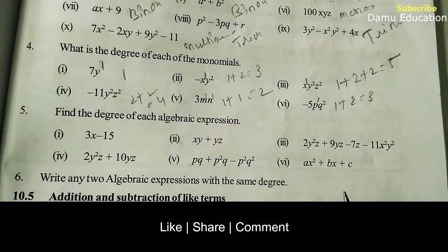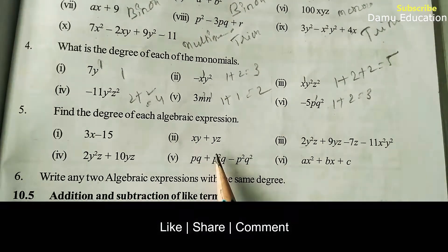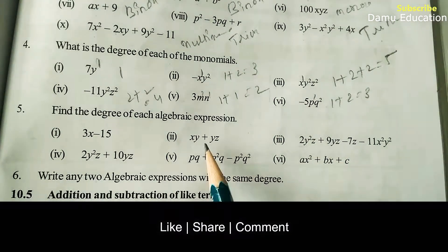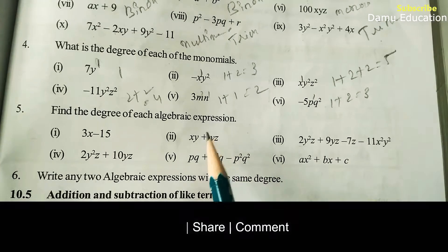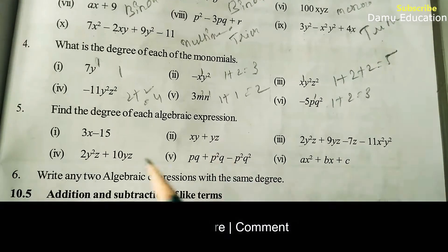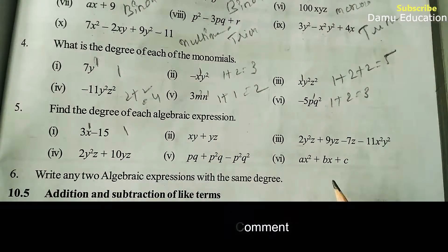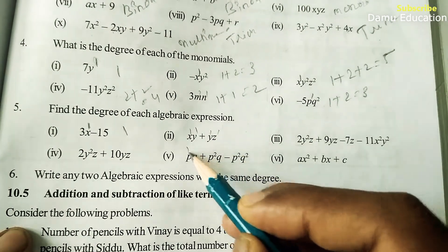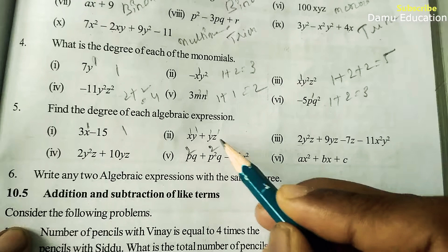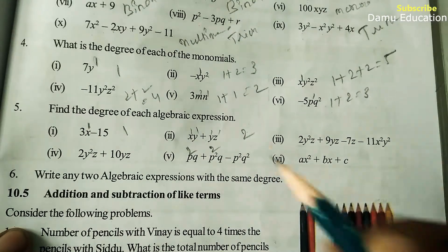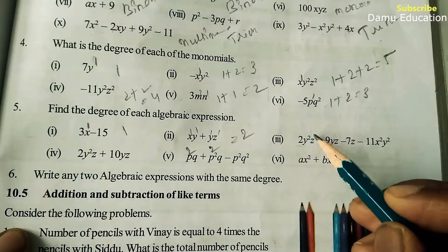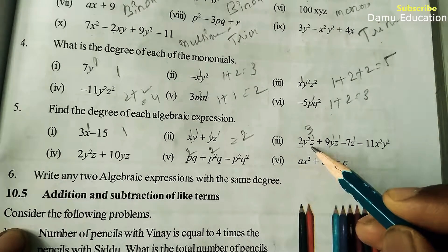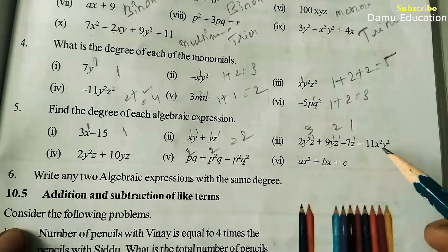Next question: find the degree of each algebraic expression. In an algebraic expression with multiple terms, you look at each term's degree and take the highest one. For x, degree is one. For xy plus xy, each term has degree one plus one equals two, so degree of the expression is two. For y squared z, degree is three; for yz, degree is two; so the highest is three.